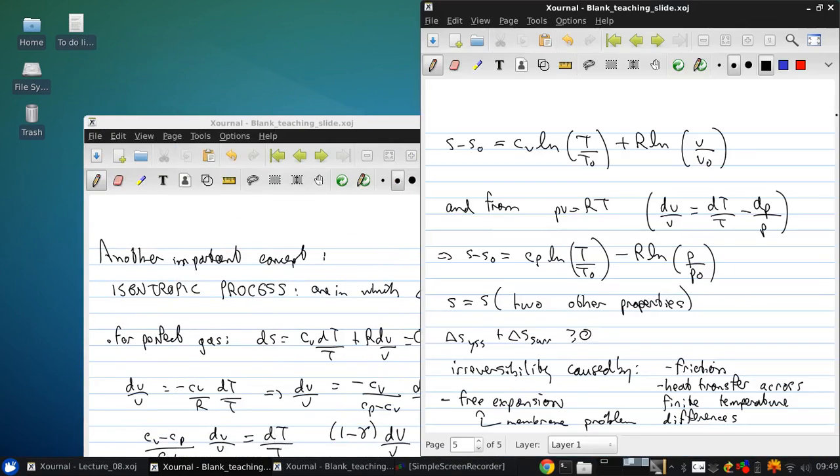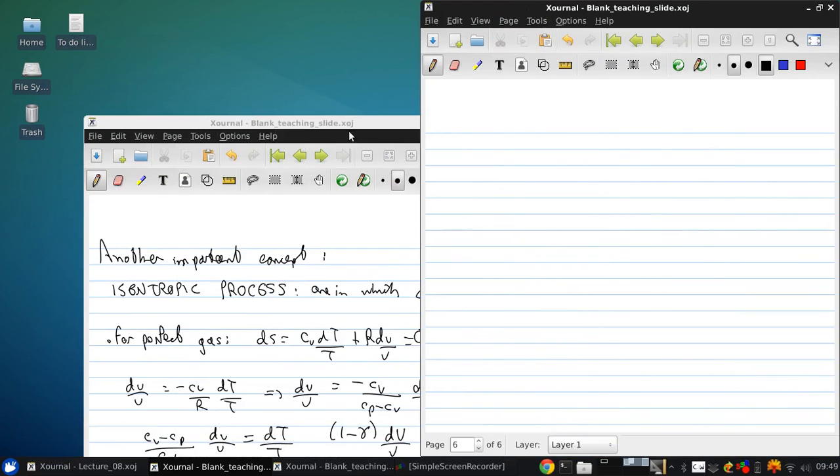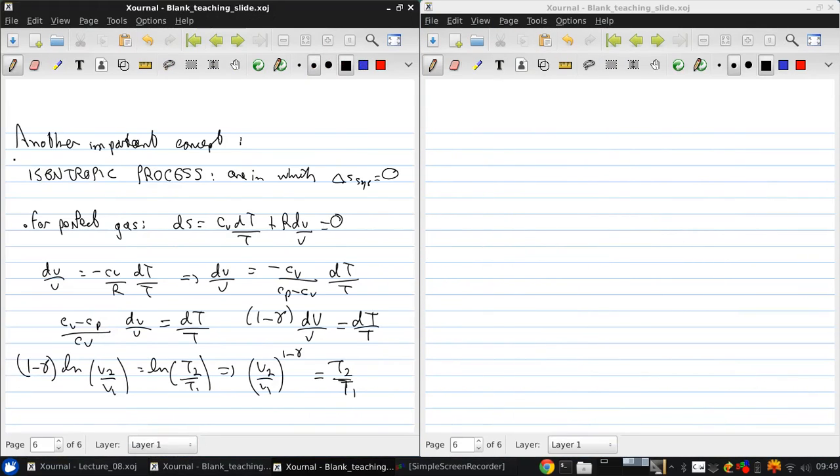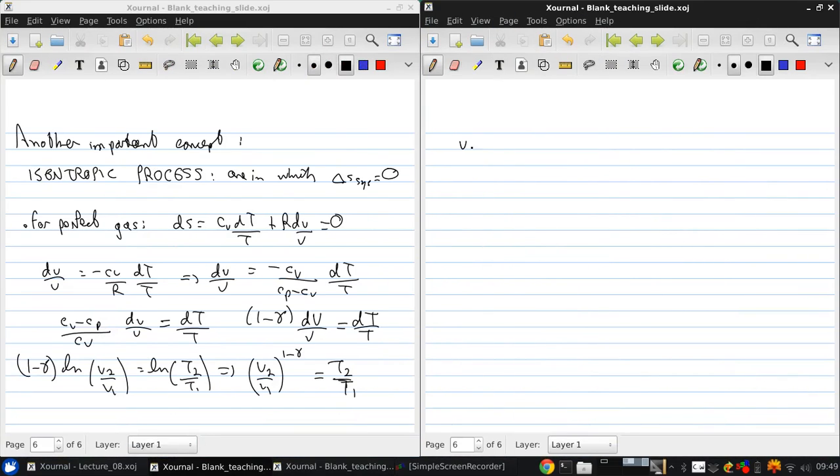More commonly, you'll see this written the other way around, as v2 over v1 equals t2 over t1 to the 1 over 1 minus gamma.